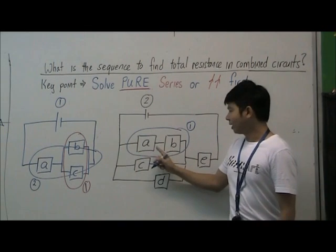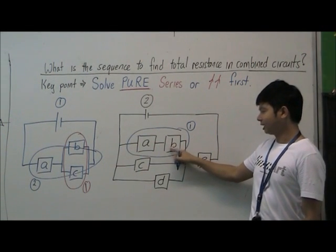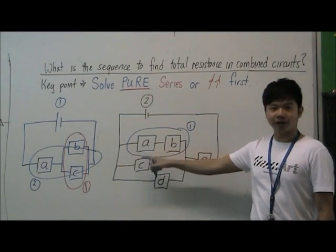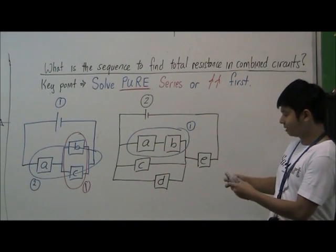Then the combined resistance of A and B, together with C and D, forms a pure parallel branch. So this will be our second step.